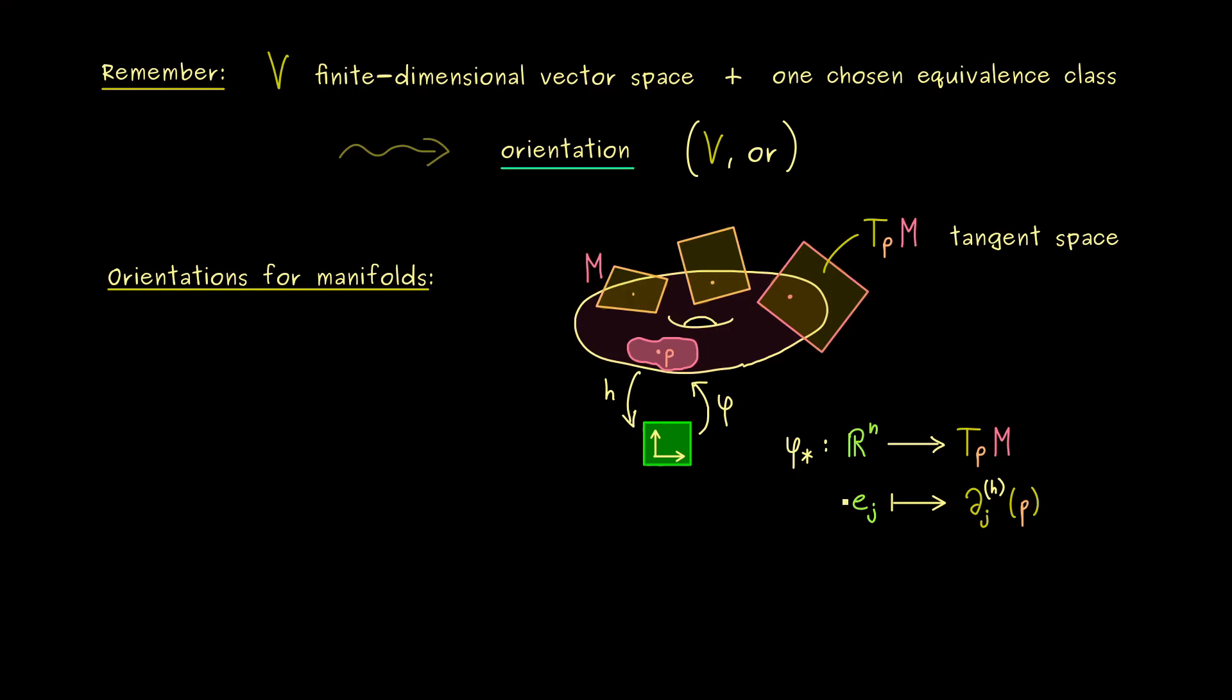And now let's assume that ℝⁿ has an orientation and also the finite dimensional vector space TPM. And then what we want is that φ* conserves the orientation.